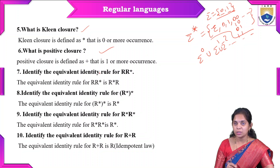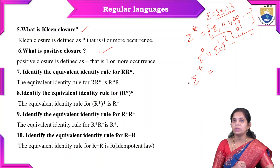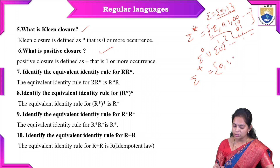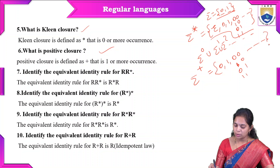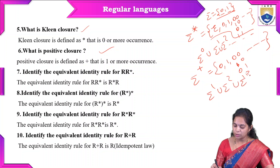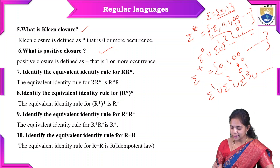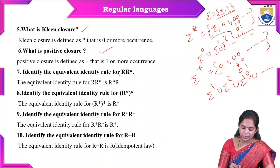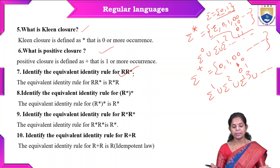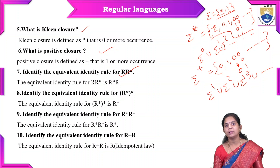Next, positive closure, represented as sigma-plus. Here we exclude epsilon and write all values: 1, 0, 01, 11, and so on. We represent this as sigma^1 union sigma^2 union sigma^3 and so on. This is about the positive closure and the regular set for this one.